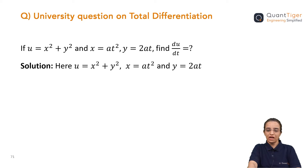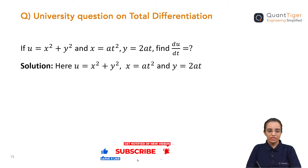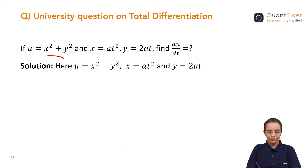Hello everyone. We will start with questions which are based on total differentiation. Here, u is given as x squared plus y squared, and x is a function of t: x is equal to at squared, and y is equal to 2at, which is y again as a function of t. In that case, we have to find du by dt.